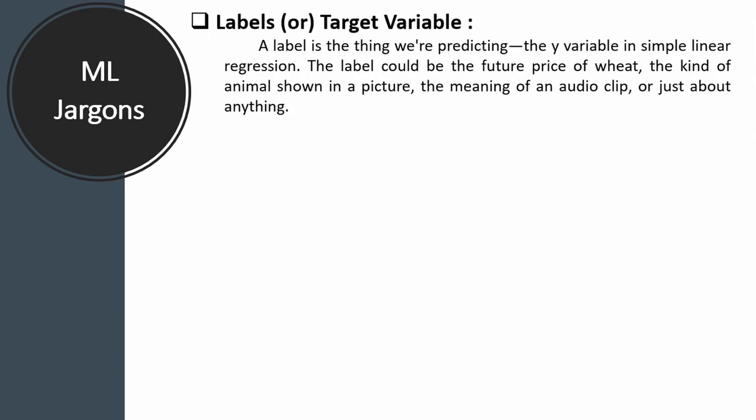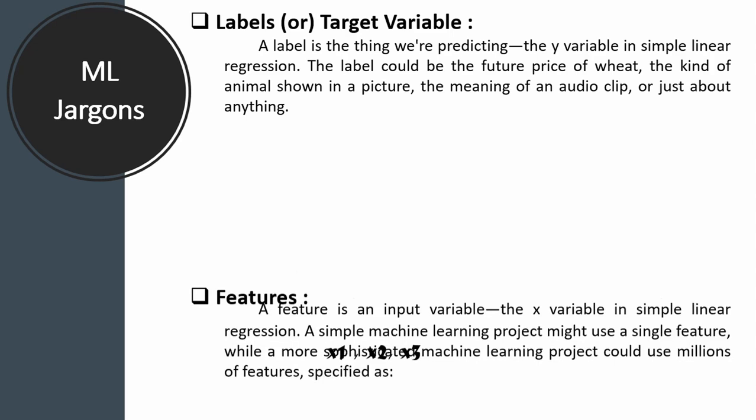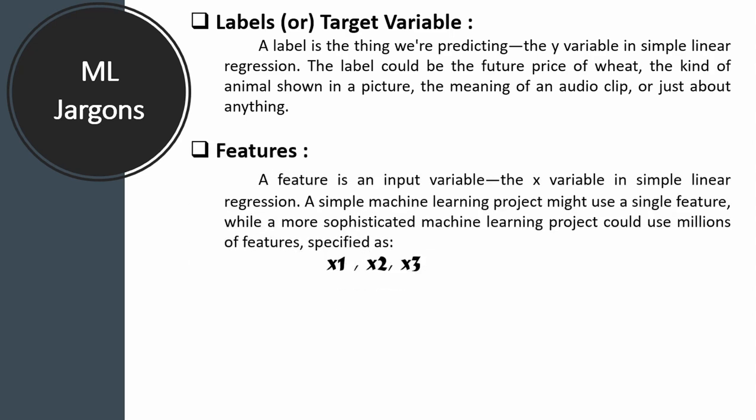Labels or target variable is what you are going to predict. Examples include the price of wheat in the future, the kind of animal shown in a picture, and the meaning of an audio clip — these are all target variables, also called the Y variable. Features are all the variables that help suggest and give the prediction — x1, x2, x3 — these are the variables that help predict your Y variable.